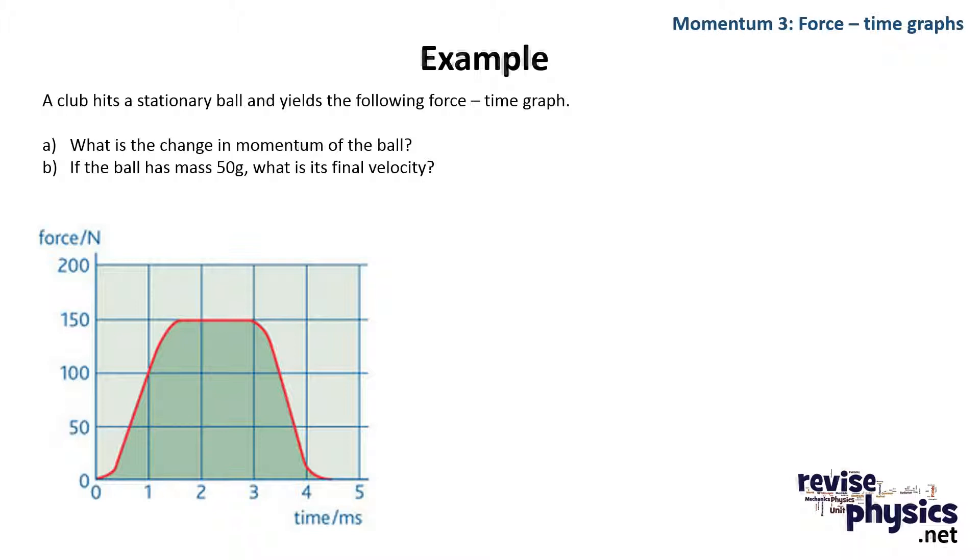So a quick example, the club hits stationary ball and you get the following force-time graph. What is the change in momentum of the ball and what would its final velocity be? Well, first of all, we need to work out what the area underneath the graph is.